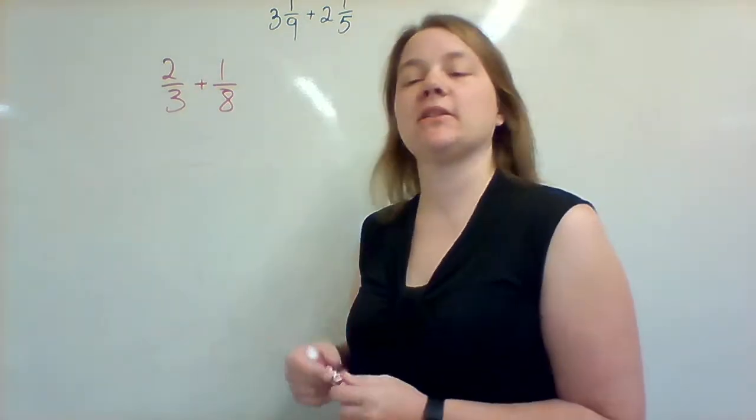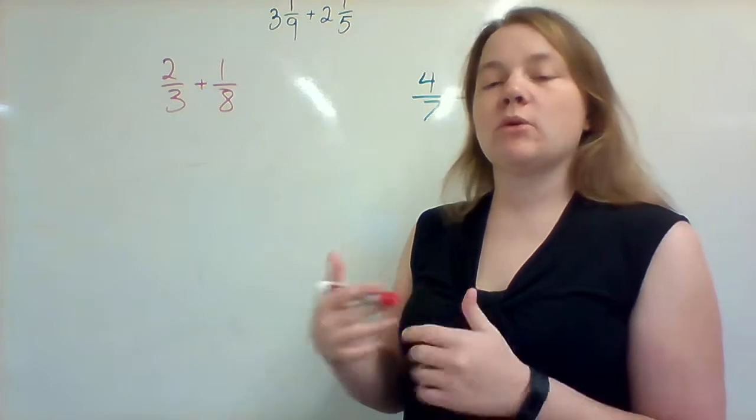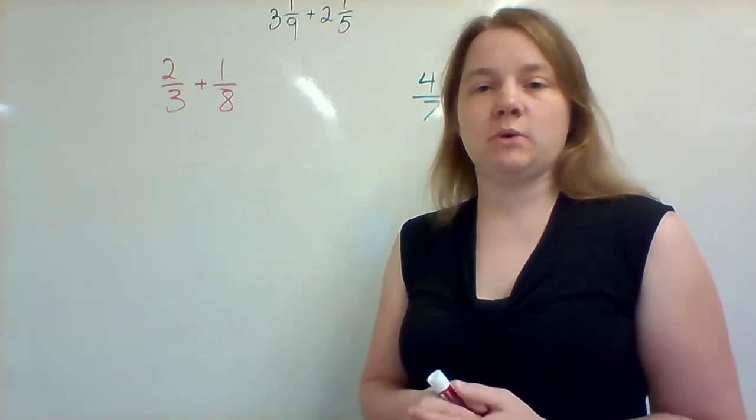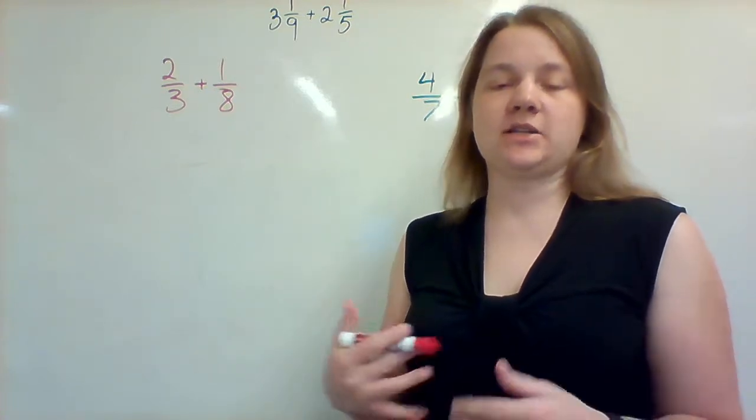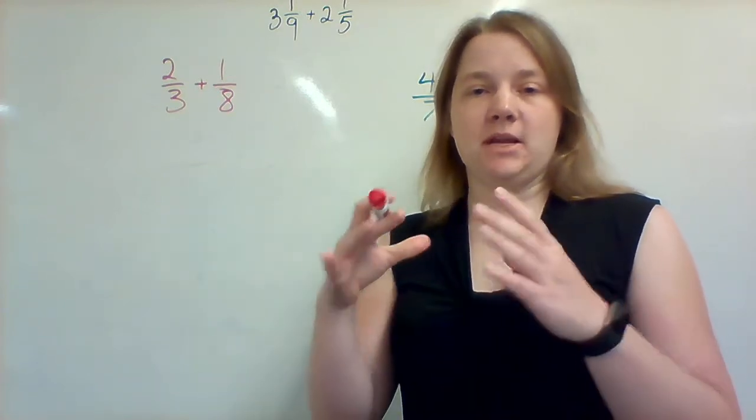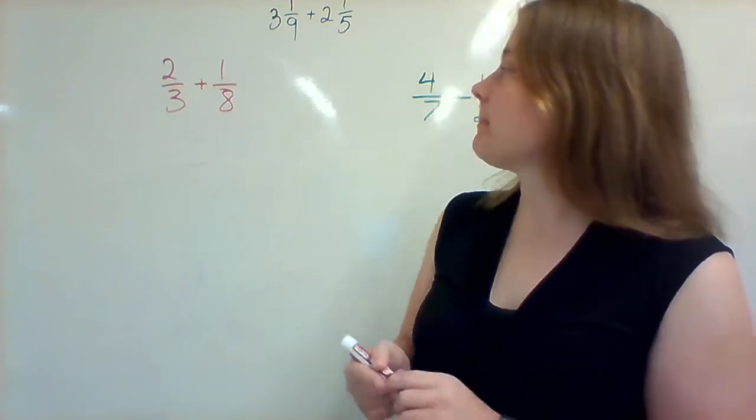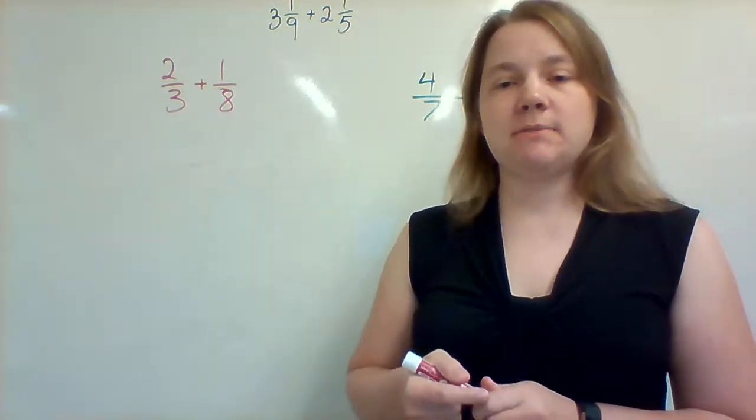So let's take a look at 2 thirds and 1 eighth. In order to complete the strategy we're going to do what I like to call the octagon, where there's going to be an empty white space in the middle that is in the shape of an octagon. So I have 2 over 3 plus 1 over 8.